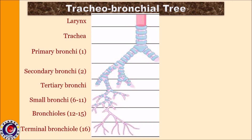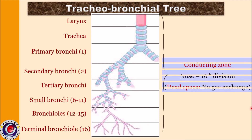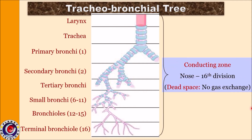The trachea undergoes numerous divisions, ultimately forming bronchioles and then alveoli. These branches are given numbers and called divisions; there are specific numbers of divisions in the tracheobronchial tree. From the trachea, the first division is the primary bronchi, and when terminal bronchioles are formed that is division number 16. These divisions from trachea to terminal bronchioles — division number 16 — constitute the conducting zone, where air does not participate in gas exchange. Therefore this space is also called dead space.